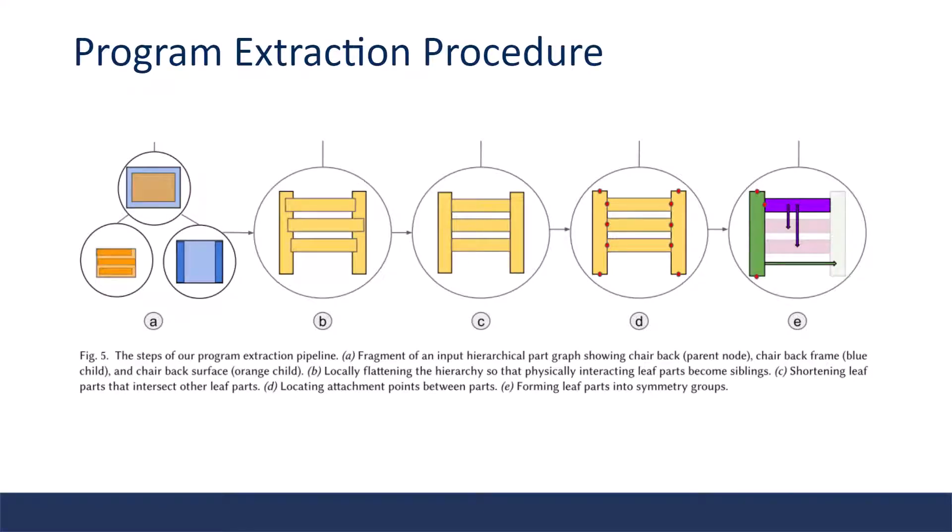To extract Shape Assembly programs from hierarchical part graphs, they perform a series of data recognitions, record cuboid parameters, locate cuboid to cuboid attachment, and identify symmetry groups. The authors also set some rules to extract only a single canonical program for each shape.